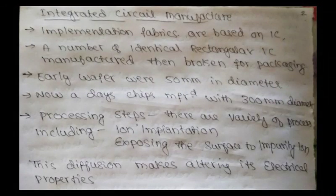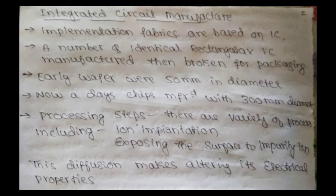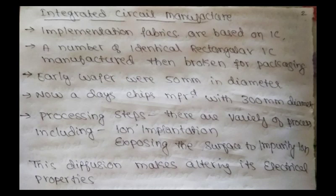Implementation fabrics for digital systems are based on integrated circuits manufactured from the surface of a wafer of pure crystalline silicon using a chemical and photographic process. A cylinder of ingot silicon is formed and sliced into wafers. Early wafers were 50 millimeters in diameter, but now we have 300 mm diameter wafers, allowing more chips to be manufactured at once and reducing waste at the edges.